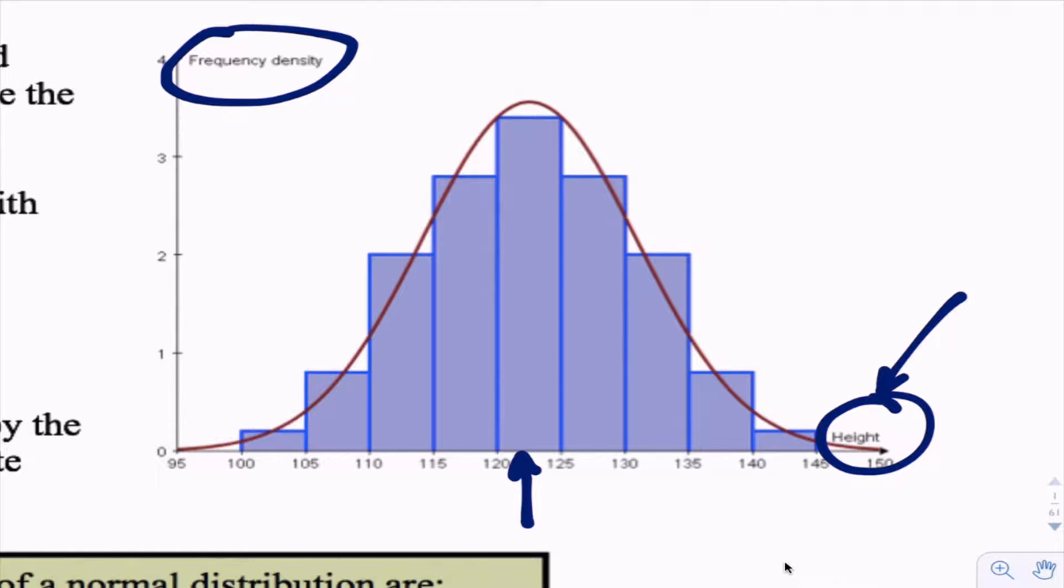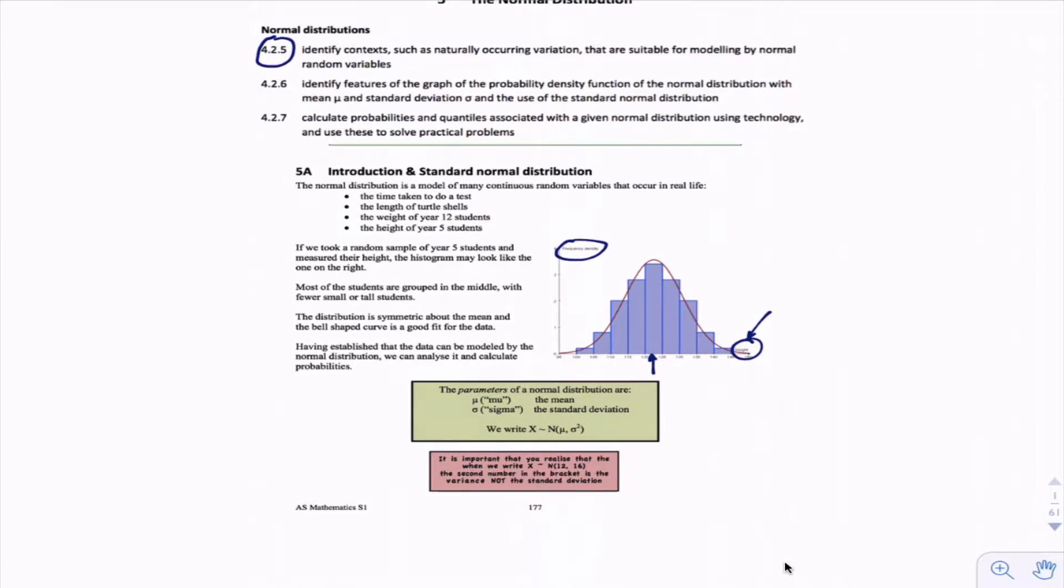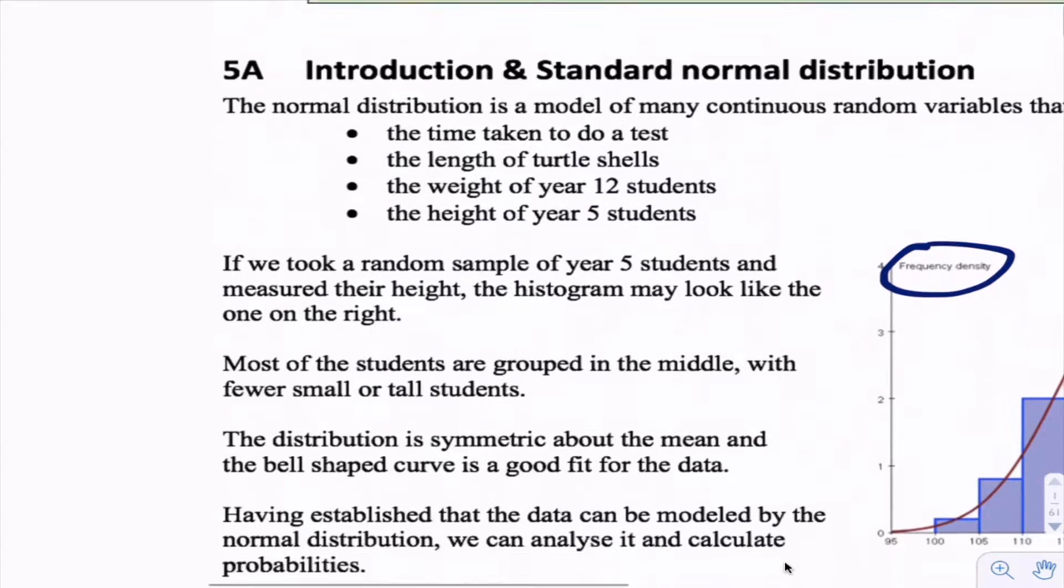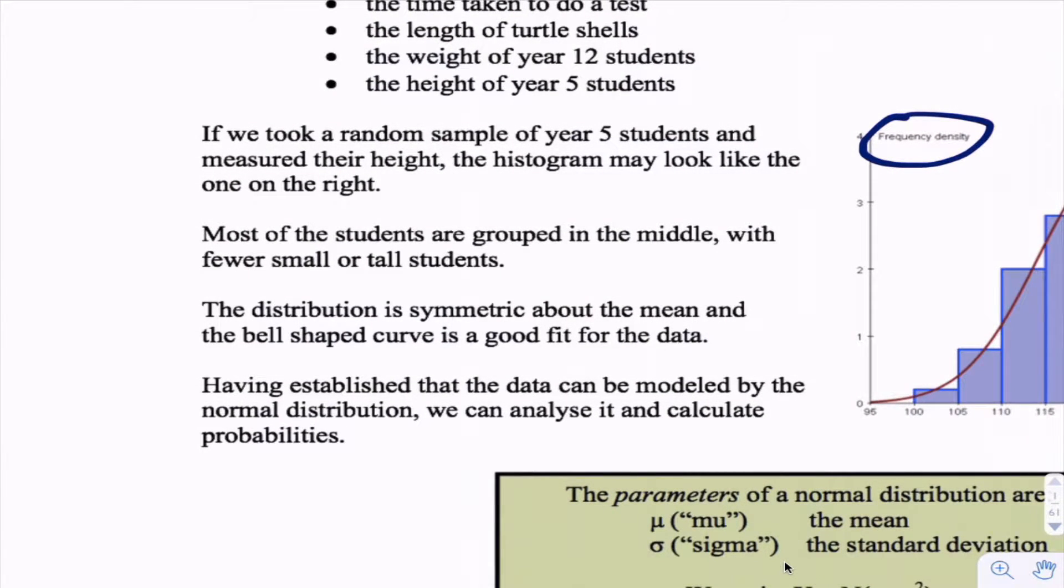The other thing that we know is approximately how many standard deviations people fall within that bell-shaped curve. Time taken to do a test, length of turtle shells, weight of year 12 students, height of year 5 students - there's just so many different measurements of things naturally occurring in nature that follow this normal distribution pattern.